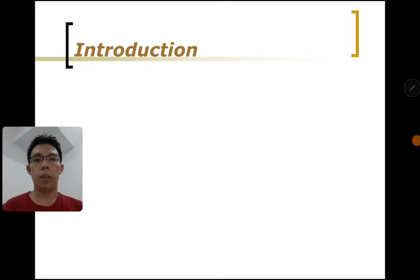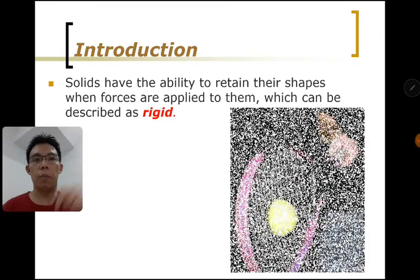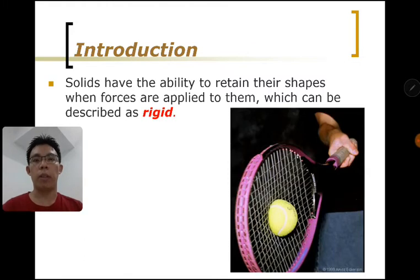In this topic we're going to look into solids. Let's look at some basic properties of solids. We always assume that they don't change their shape even when we hit hard on them. For example, in this picture here there's a tennis ball being hit by a racket and the tennis ball doesn't seem to change its shape.